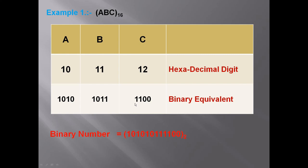C binary equivalent is 1100, B is 1011, and A is 1010. So reading from left to right we write: 1010, 1011, 1100. The base will be 2 because we have converted into a binary number.